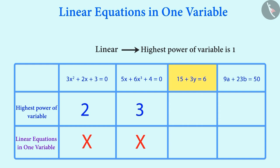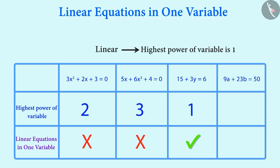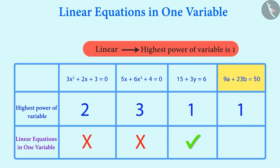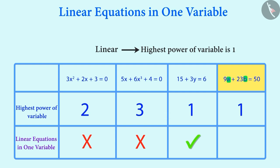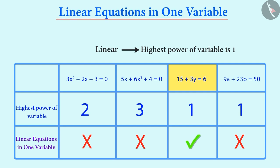Now let us consider the third equation. Here, the highest power of the variable y is 1, therefore it is a linear equation in one variable. In the fourth equation, the highest power of variables a and b is 1, so this is a linear equation, but because we have two variables a and b, this equation is not a linear equation in one variable. Therefore, only the third equation is a linear equation in one variable.